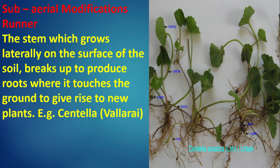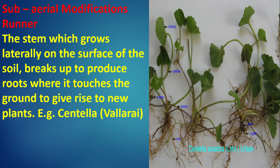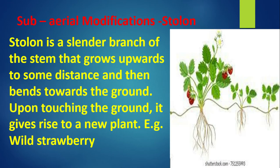Subaerial modification — Runner: The stem which grows laterally on the surface of the soil breaks up to produce roots where it touches the ground, giving rise to a new plant. For example, Centella asiatica. Stolon: A stolon is a slender branch of the stem that grows upwards to some distance and then bends towards the ground. Upon touching the ground, it gives rise to a new plant. For example, wild strawberry.